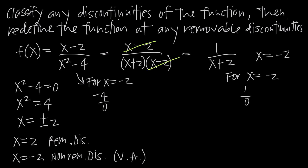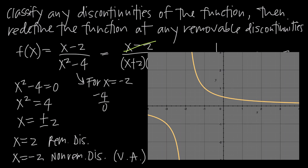The discontinuity at x equals negative 2 is a vertical asymptote — we call asymptotes essential or infinite discontinuities. At x equals 2 we have a removable, or point, discontinuity. Looking at the graph of the original function, we can see the vertical asymptote at x equals negative 2 and draw an empty circle at x equals 2 to indicate the removable discontinuity. So we have a vertical asymptote at x equals negative 2 and a point discontinuity at x equals 2.